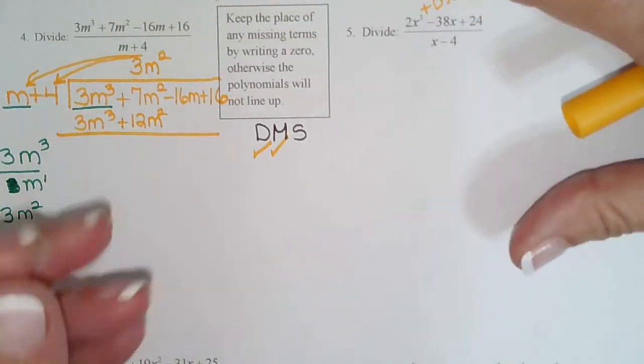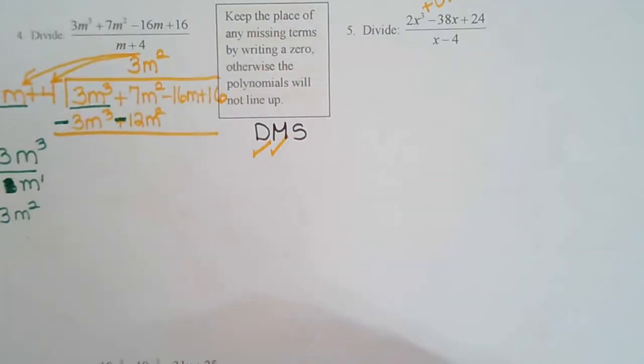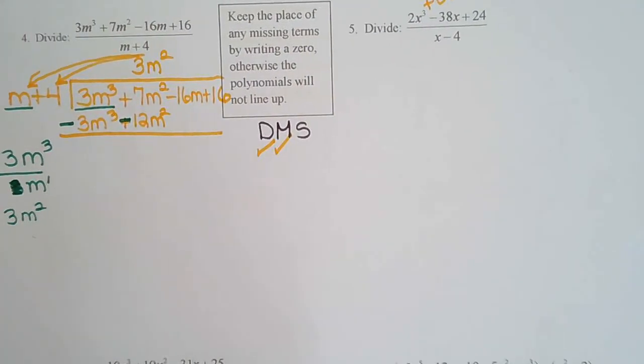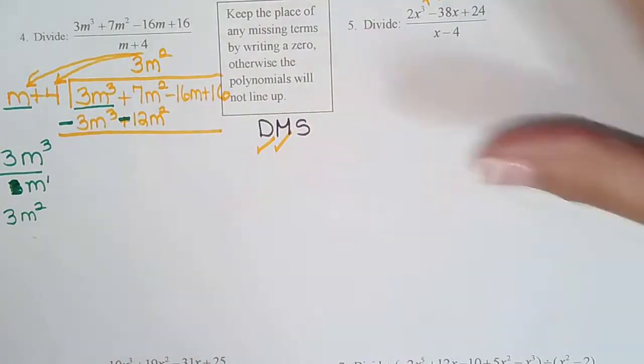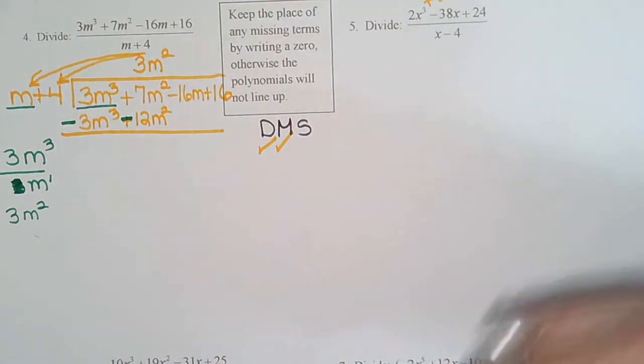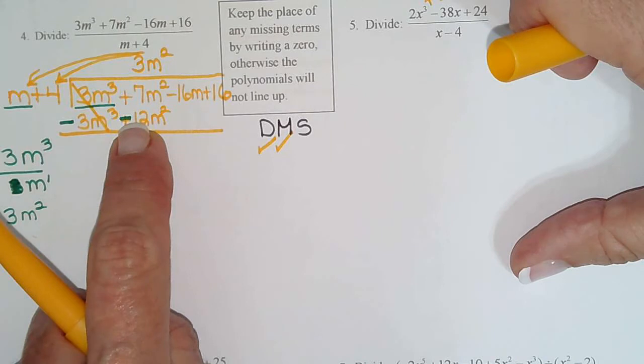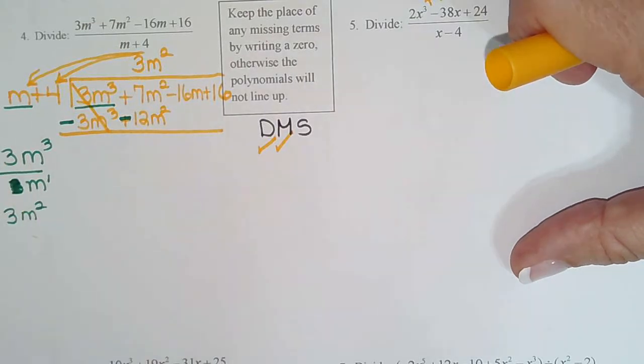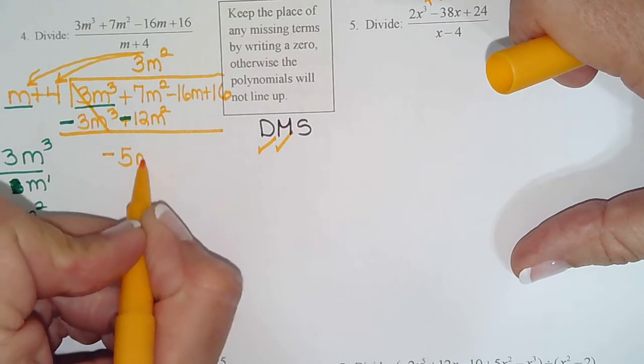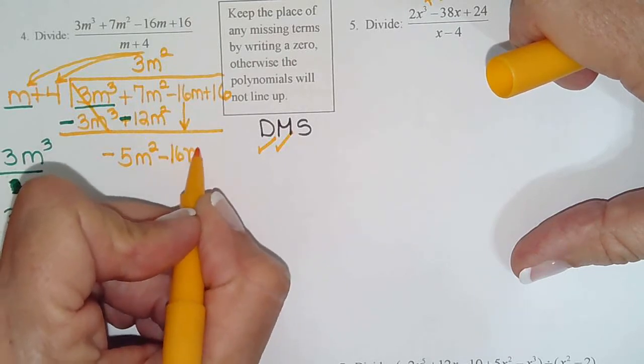So our multiplication is done for the first time. And then remember the little poem. Draw the line. Change the signs. So all the signs in the bottom row get changed. This would be a really good time to make sure you have a colored pen or pencil. Because if you use the same color, you're not going to know which sign's right and which sign's not right. So I always tell students when you change the signs, make sure and use a different color. So now I'm ready to subtract. 3 minus 3. As I said, if you've done it correctly, those front terms should always cancel. And this is probably the most common thing. Students change the front sign and they forget to change that. You have to change every sign in the second row. 7 minus 12 is negative 5m squared. And just like regular long division, then you bring down one more term. So negative 16m.